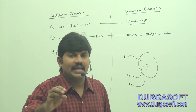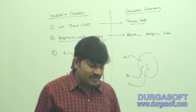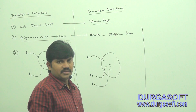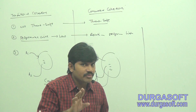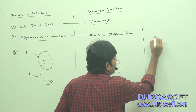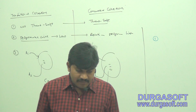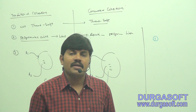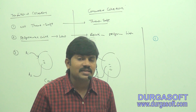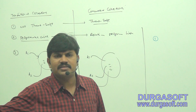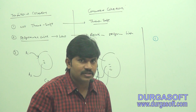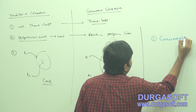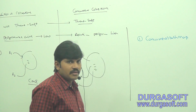Now the target is to understand what are the various important concurrent collections. There are three main important concurrent collection classes we are going to discuss in detail. If asked in an interview what concurrent collections you are aware of, you should be able to answer. The first one is ConcurrentHashMap.